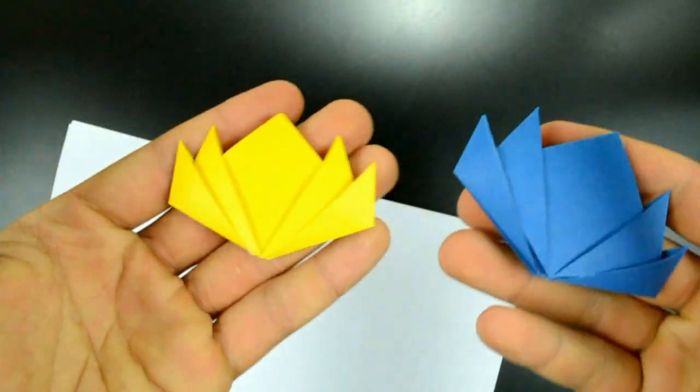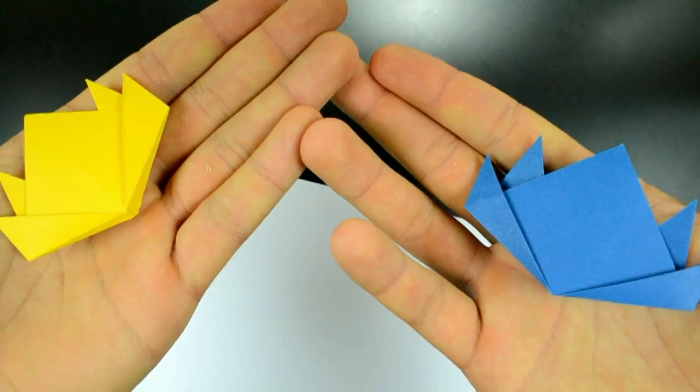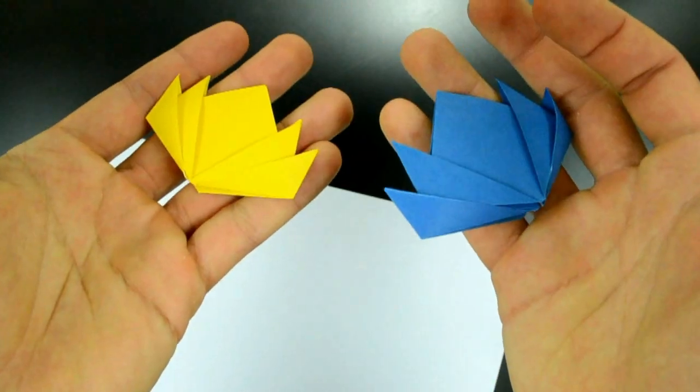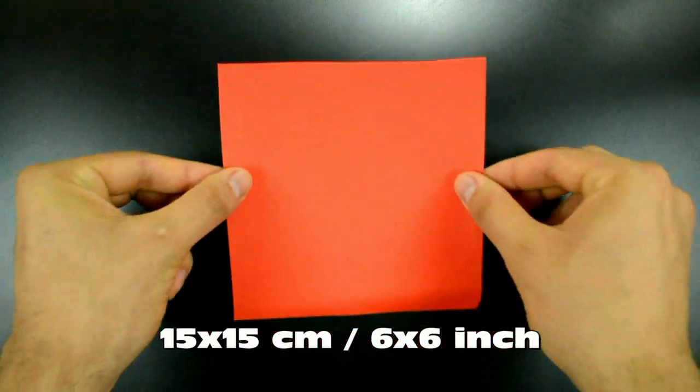To do it you only need one square of paper, size you prefer. In this video I'll use 15 by 15 centimeters, 6 by 6 inches, but I recommend a small size and, for a better result, color on both sides.